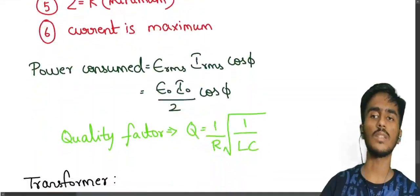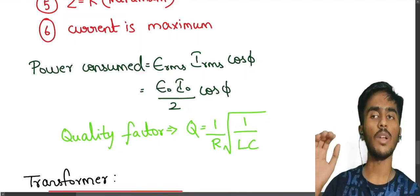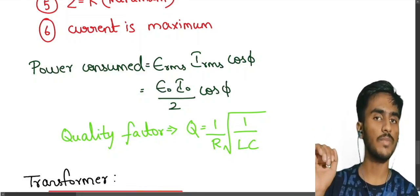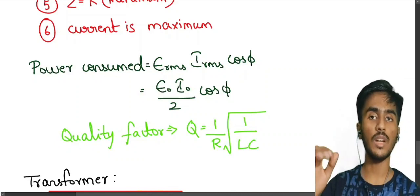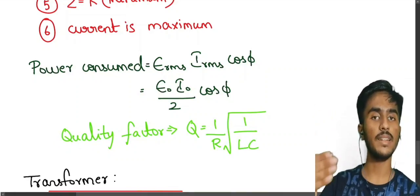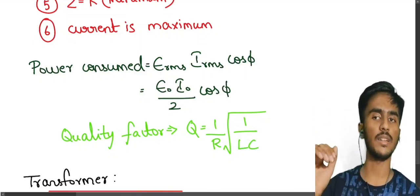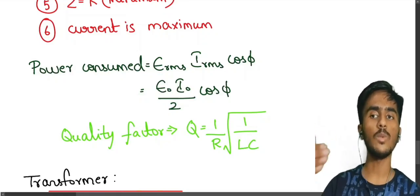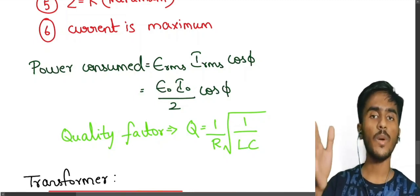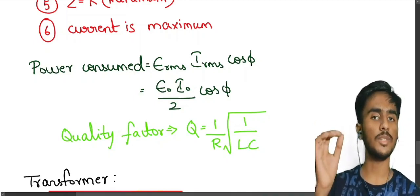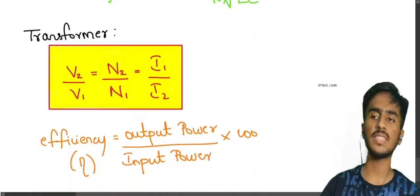Next is the average power in an RLC circuit. The formula is: P equals E RMS multiplied by I RMS multiplied by cos φ. Here φ is the phase difference, which depends on whether the circuit has a resistor, inductor, or capacitor. The quality factor formula is: Q equals 1 by R multiplied by root of L by C. Quality factor is inversely proportional to resistance.